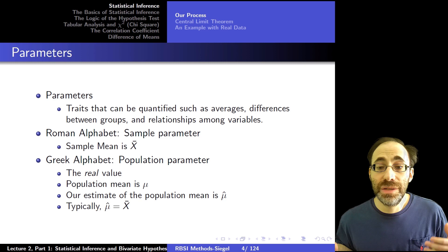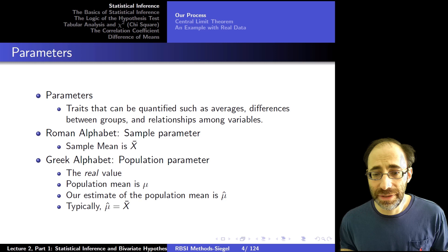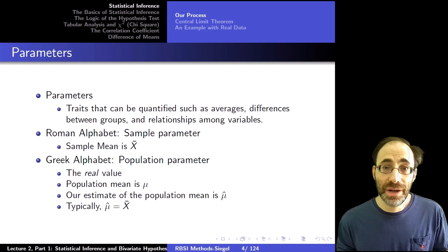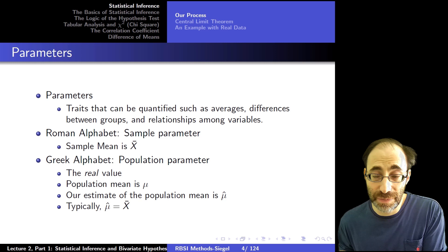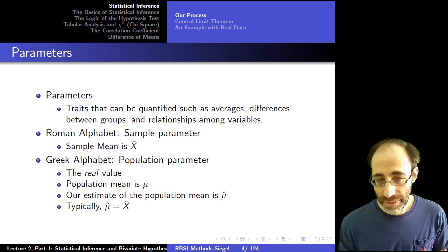Our estimate of the population mean is mu-hat, also sometimes called x-bar — they're often the same. The hats mean estimates of a population parameter, whereas the Roman letters mean characteristics of the sample. Typically we use our sample to infer estimates of the population, so our sample parameters like x-bar are the same as our estimates of the population parameters, mu-hat.